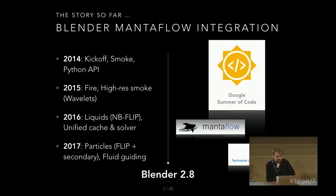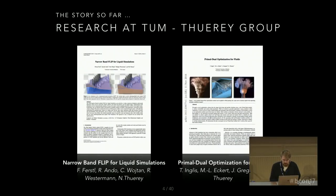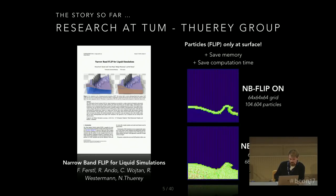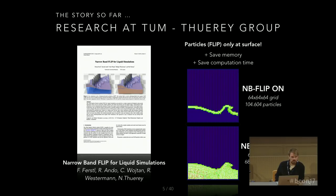It's now 2017 and Blender 2.8 is on the shelf, and I'm hoping we can get this integration into Blender 2.8 for everyone to play with. There are two papers that influenced my project. The first is 'Narrowband FLIP for Liquid Simulations.' The idea is straightforward: instead of filling the entire volume of the liquid with FLIP particles, which wastes memory and computation time, you model just the surface with a narrow band of particles.